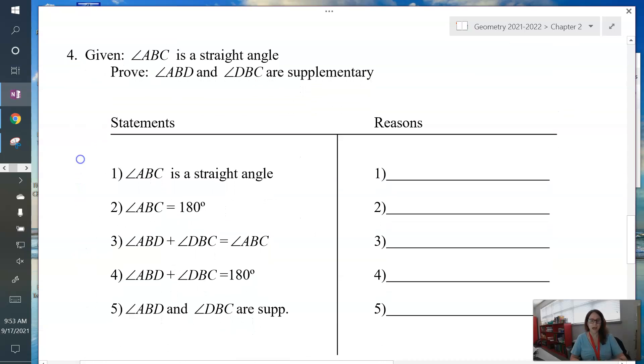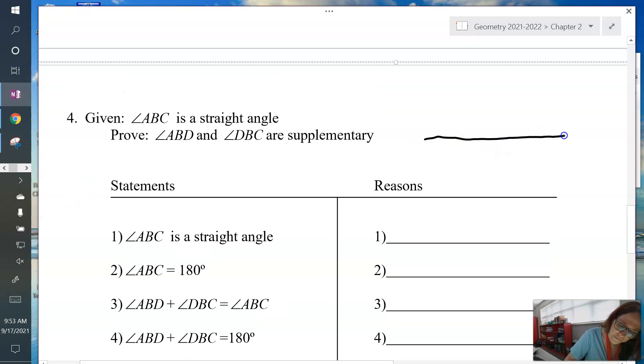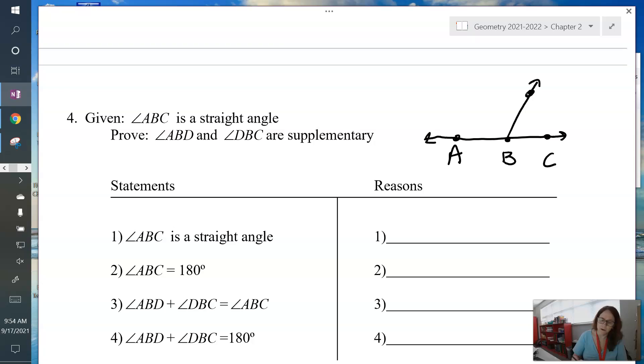Here's another one. Now we're given that angle ABC is a straight angle. Prove that angle ABD and DBC are supplementary. Draw yourself a picture. ABC is a straight angle. And then we have angle ABD, so that means I need a point D out here somewhere. And we're trying to prove that angle ABD and angle DBC are supplementary. Again, I'm giving you the statements. All you have to do is put in the reasons.